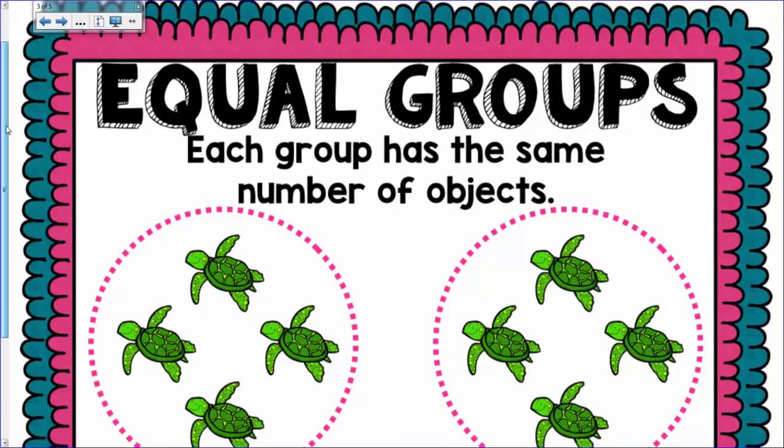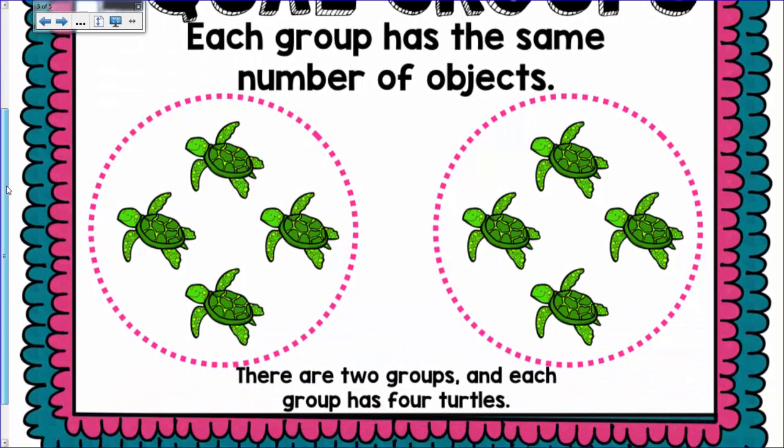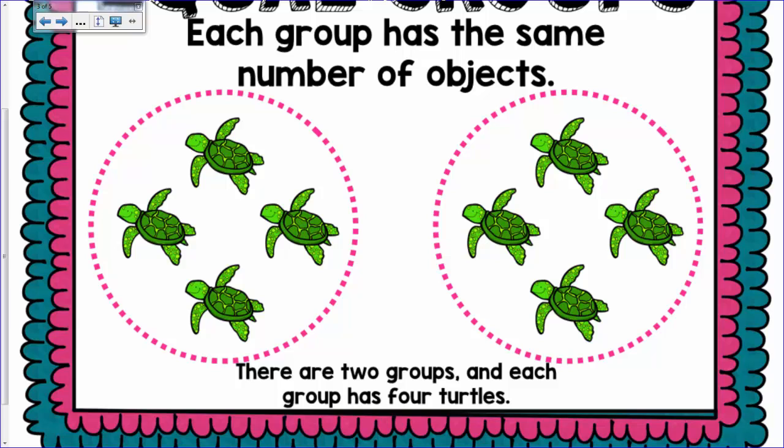You can also sort them into equal groups. Each group has the same number of objects. There are two groups, the pink circles, and each group has four turtles.